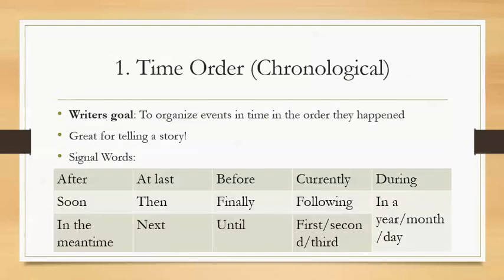First, we have time order, which is the chronological organizational pattern. The goal for the writer is to organize events in the time in which they happened. This is a great pattern for telling a story. The signal words you'll see in this type of paragraph or essay are: after, at last, before, currently, during, soon, then, finally, following, in a year, in a month, in a day, in the meantime, next, until, and first, second, or third.